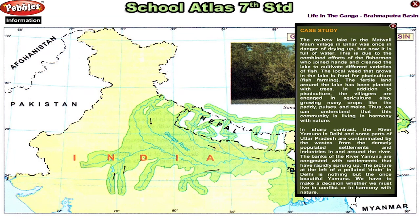In sharp contrast, the river Yamuna in Delhi and some parts of Uttar Pradesh are contaminated by the waste from densely populated settlements and industries in and around the river. The banks of the river Yamuna are congested with settlements that have rapidly sprung up. The picture at the left of a polluted drain in Delhi is nothing but the once beautiful Yamuna. We have to make a decision whether we must live in conflict or in harmony with nature.